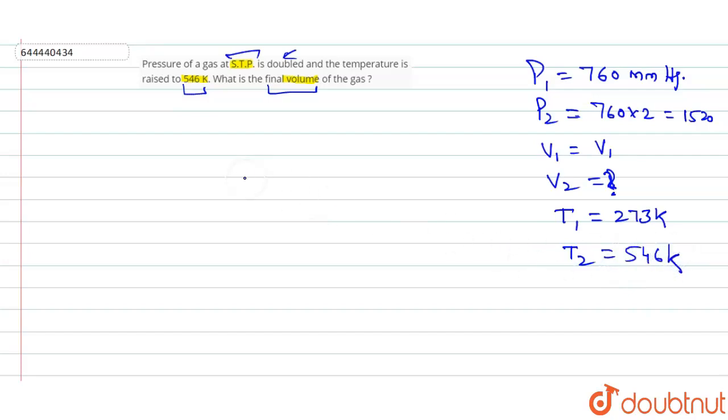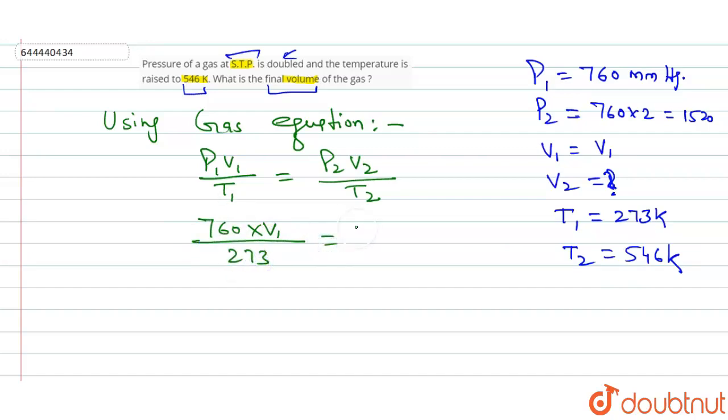So let's start putting it into gas equation. I'll write using gas equation. As you all know what is the gas equation: P1V1 upon T1 is equal to P2V2 upon T2. Okay, so what is P1 here? P1 is 760, V1 is V1, T1 what is T1? It is 273.